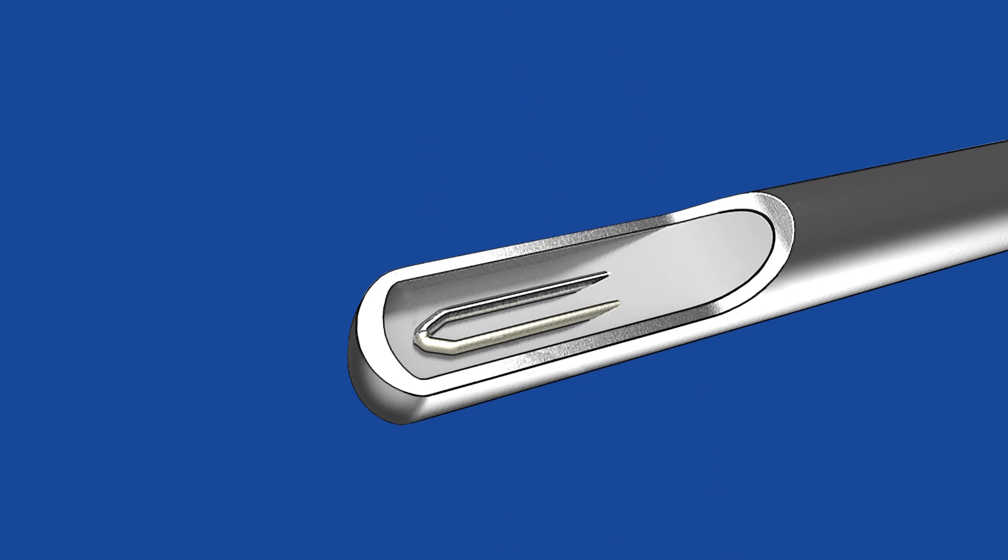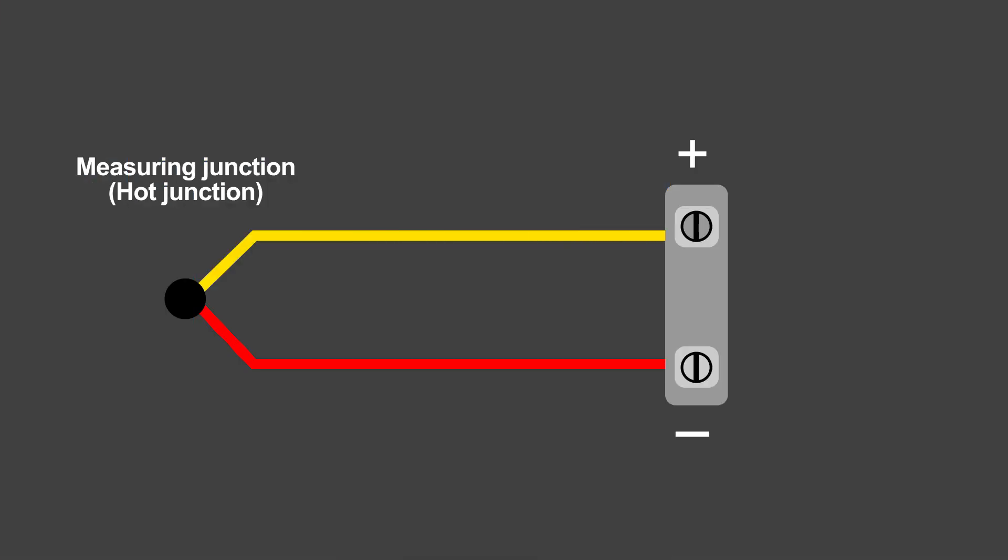How do they accurately register temperature differentials? Two dissimilar metal wire conductors are connected at one end. This is the measuring junction, or hot junction. At the other end, the wires are connected to the body of a known temperature. This is the reference junction, or cold junction.